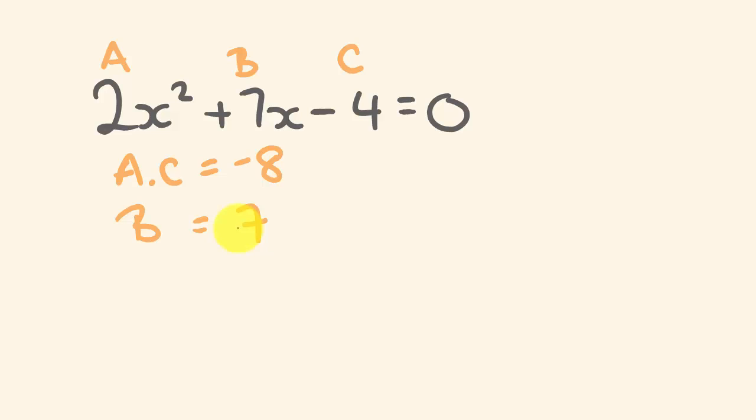B is equal to 7. Now what? Well, we're going to look for two numbers, two factors of negative 8, that when you multiply them, give negative 8, that would make the factors of negative 8. But when you add them, give a 7. So two numbers that you multiply to give negative 8, but add to give 7 here. The factors of negative 8 that add to give 7 are the following.